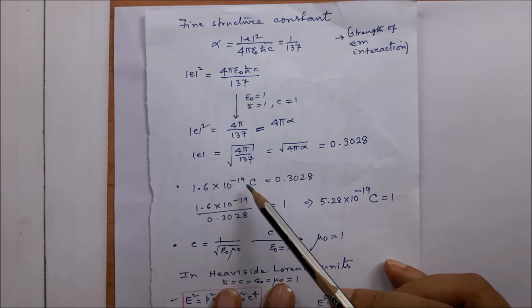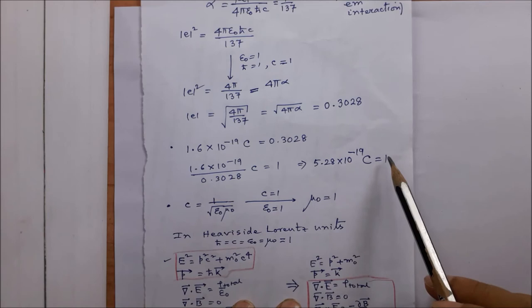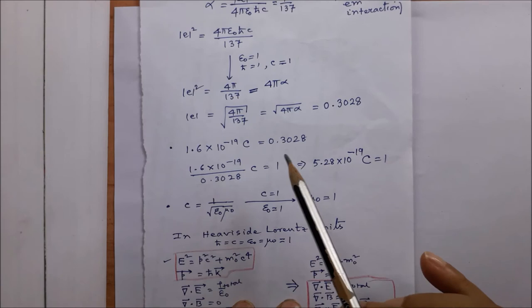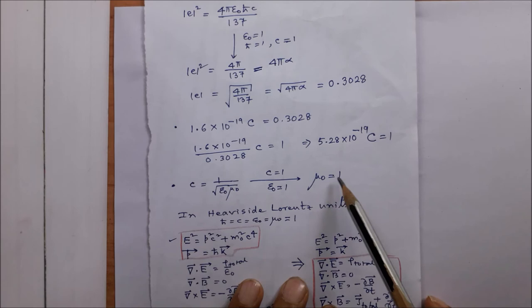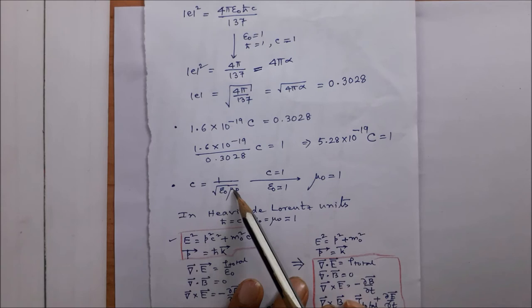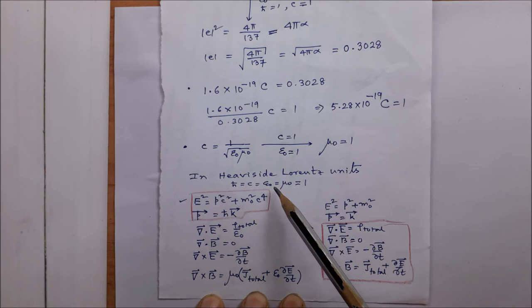The value of e in the SI system is 1.6 times 10 to the power minus 19 coulombs, and therefore this amount in coulombs is set equal to 0.3028 in the Heaviside-Lorentz system. Also, such a choice of epsilon-0 equal to 1 leads to mu-0 equal to 1, because from the standard expression c = 1 over square root of (epsilon-0 times mu-0): if epsilon-0 is 1 and c is 1, then mu-0 must be 1.